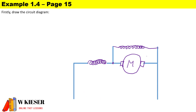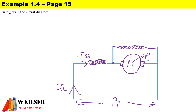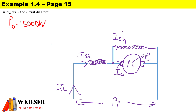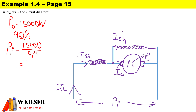This is a motor — mechanical output, electrical input — with terminal voltage across the terminals. The supply current passes through the series winding; most current goes through the armature and a small amount through the shunt winding. The output power is 15,000 watts. To calculate input power: 15,000 divided by efficiency of 0.9, giving an input power of 16,667 watts.